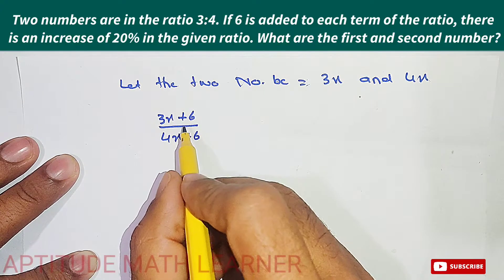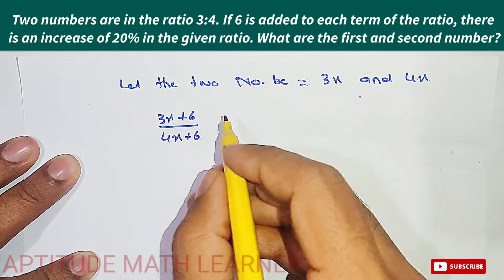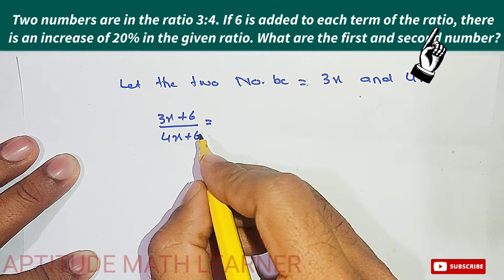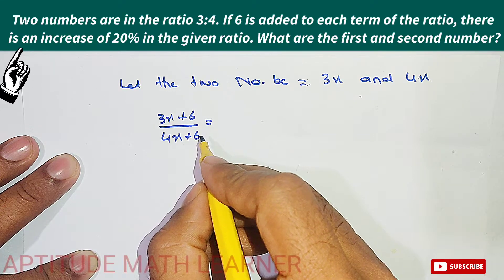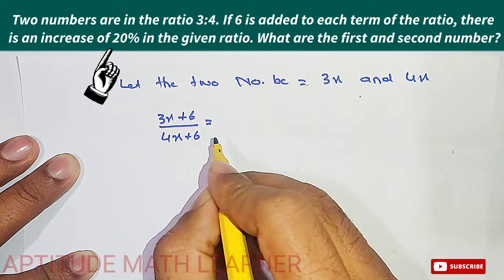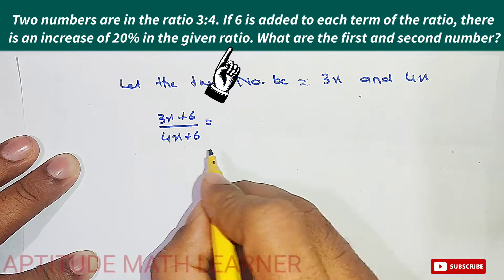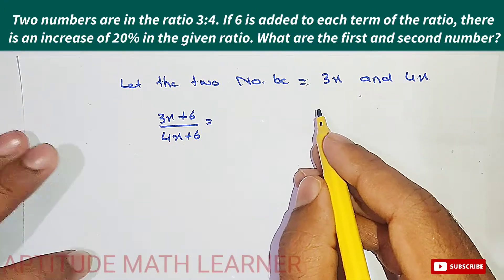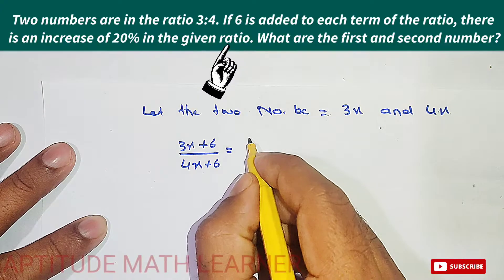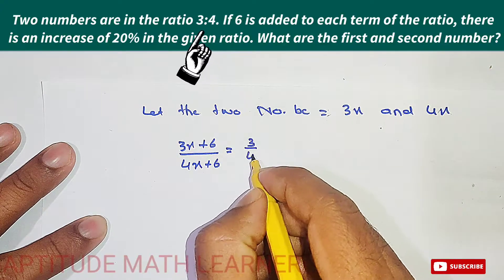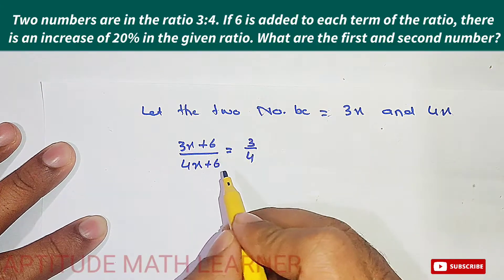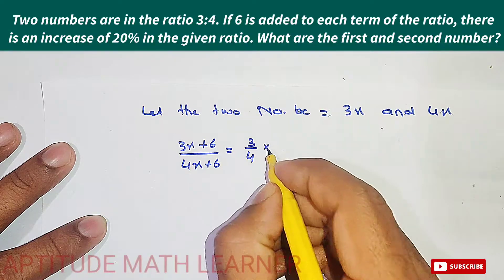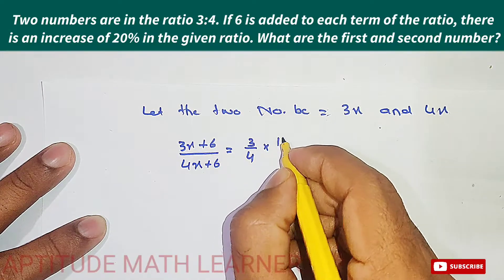After adding 6 to each term, it says there is an increase of 20 percent in the given ratio. The given ratio is 3 is to 4, and after adding 6 there is a 20 percent increase in the given ratio, so this becomes 120 upon 100.